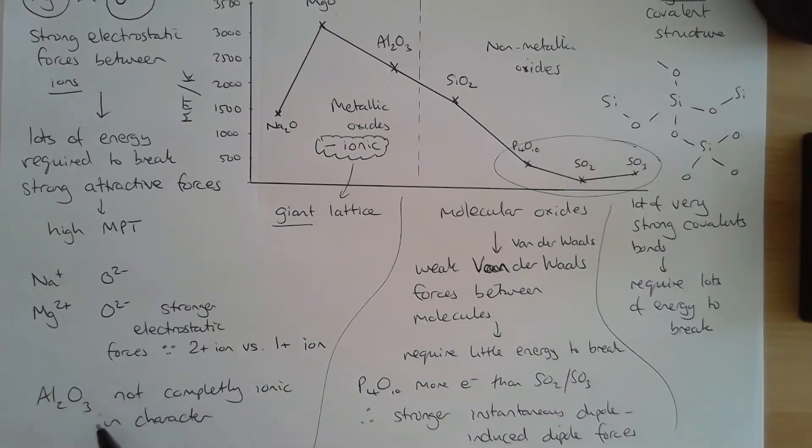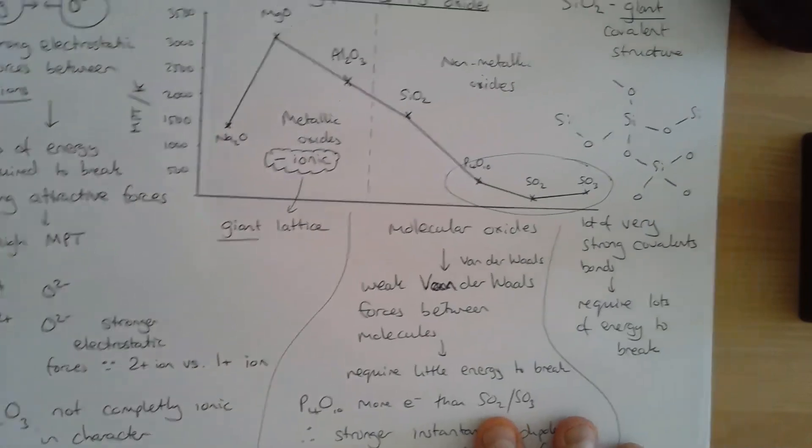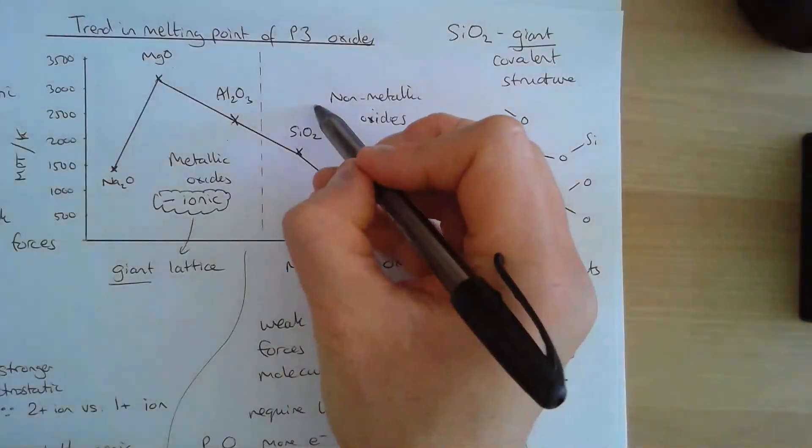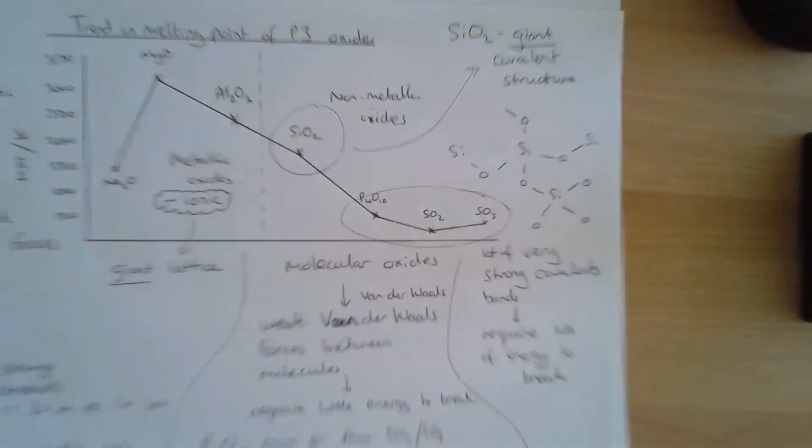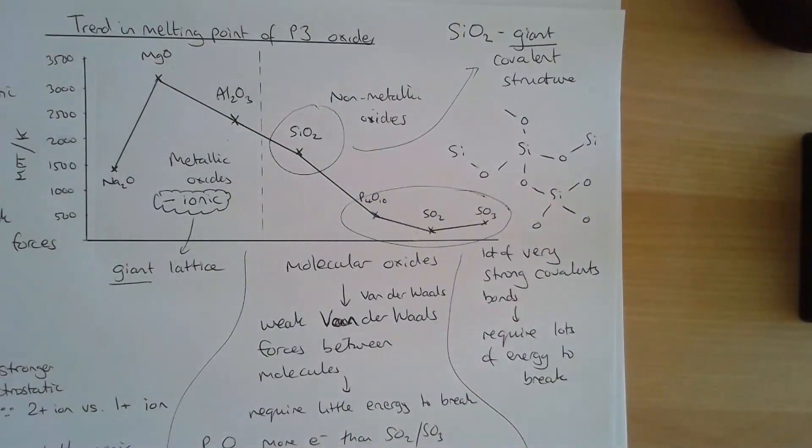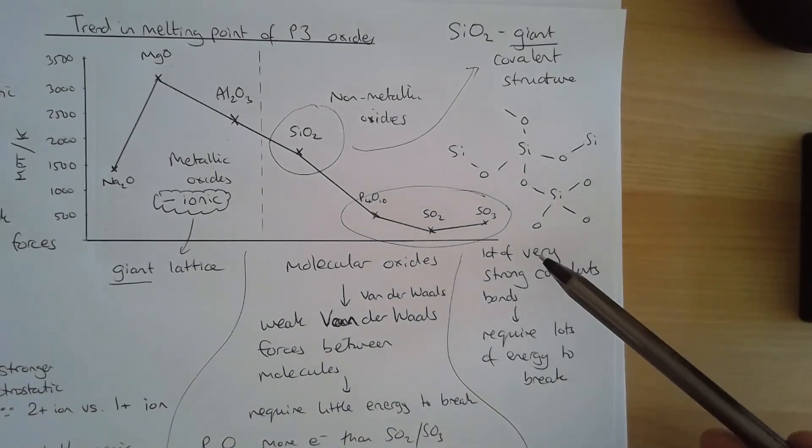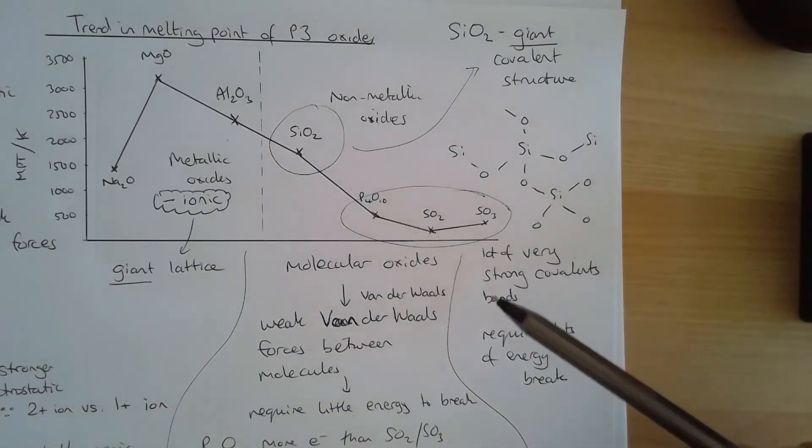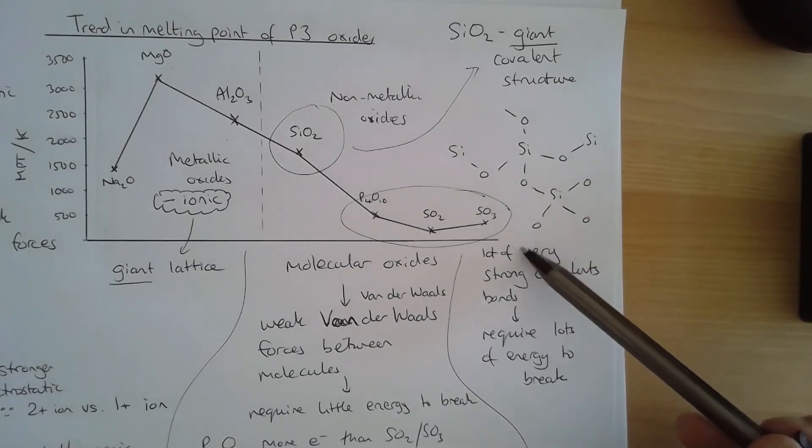That model doesn't hold completely true for aluminium oxide because it's not fully ionic in character. We've then got SiO2, silicon oxide, which is a giant covalent structure. In it, each silicon is bonded to four oxygens. The oxygens obviously are bonded to two silicon atoms. This leads to lots of very strong covalent bonds as a giant covalent structure. These require lots of energy to break, therefore the high melting point.